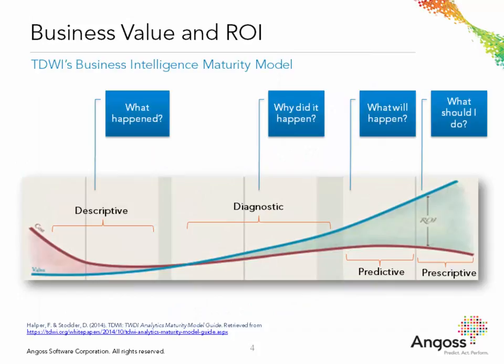Analysts agree that the next trend in gaining value from analytics will be through optimization. Here we see that according to TDWI research, the value to be gained steadily increases as an organization matures its approach in analytics — from descriptive to diagnostic and predictive, towards optimization and prescriptive analytics. This leads us to believe that optimization can add a lot of value to almost any business.